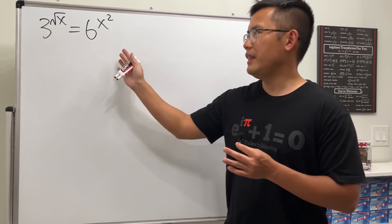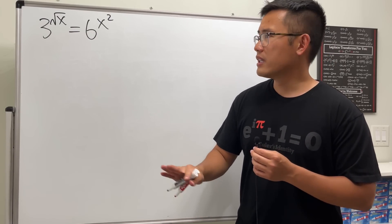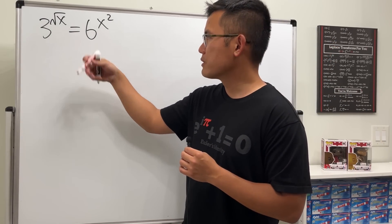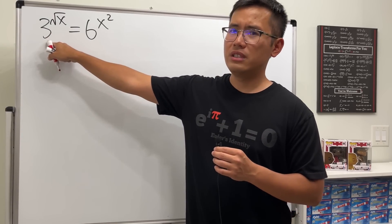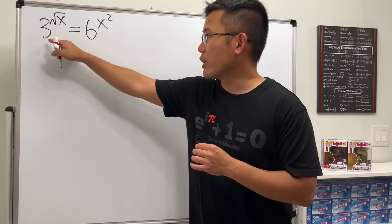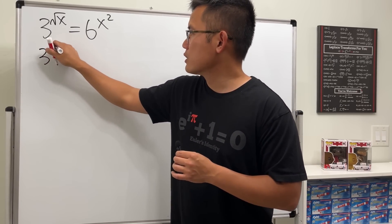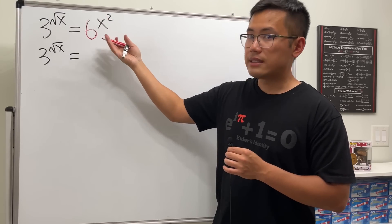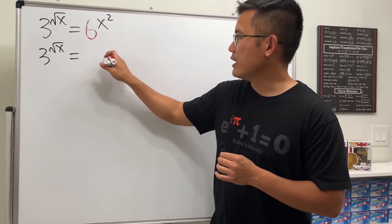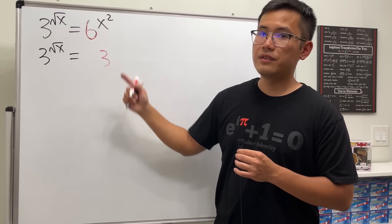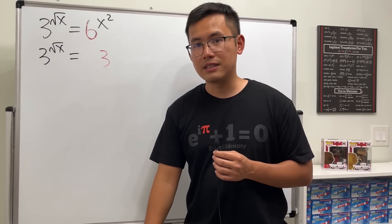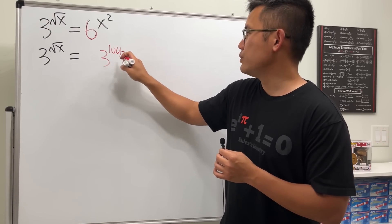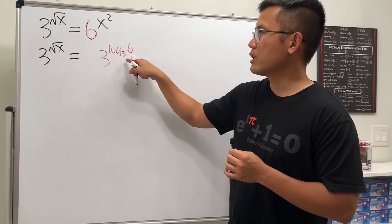It's not nice when we have an exponential equation where the bases are different, so let's see how we can make them the same base. I'm going to keep everything in terms of base three. We have 3 to the square root of x, and for the six, we'll use the usual trick — writing it as 3 to the log base 3 of 6, because that gives us 6.